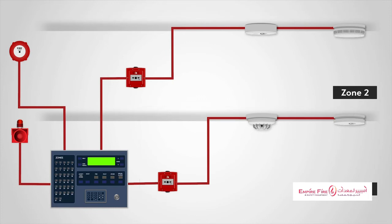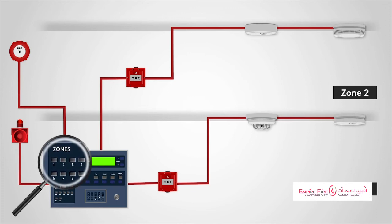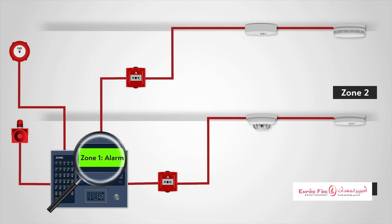Each zone is indicated at the fire alarm control panel, either with an indicator lamp, a text display, or in some cases both.